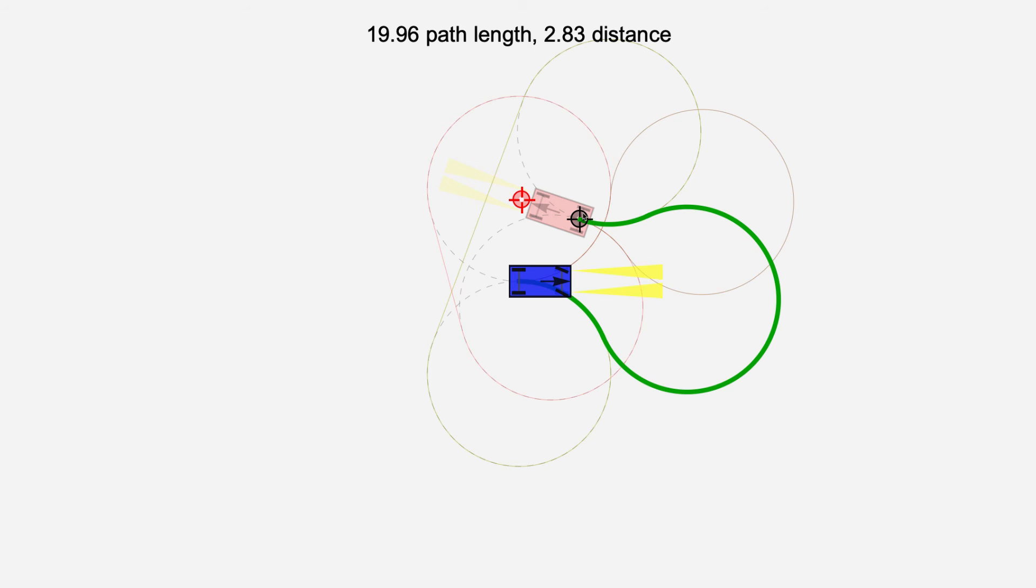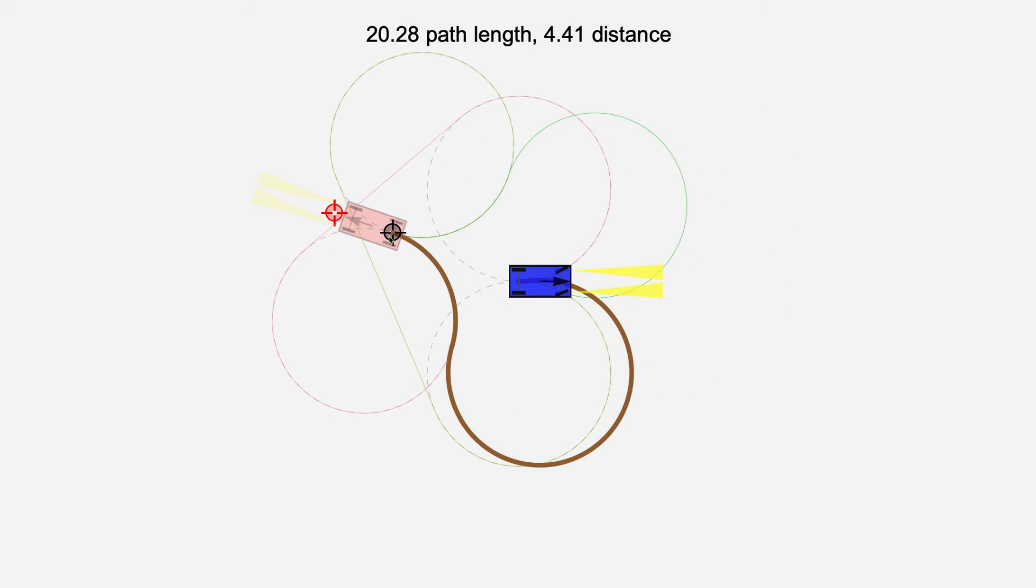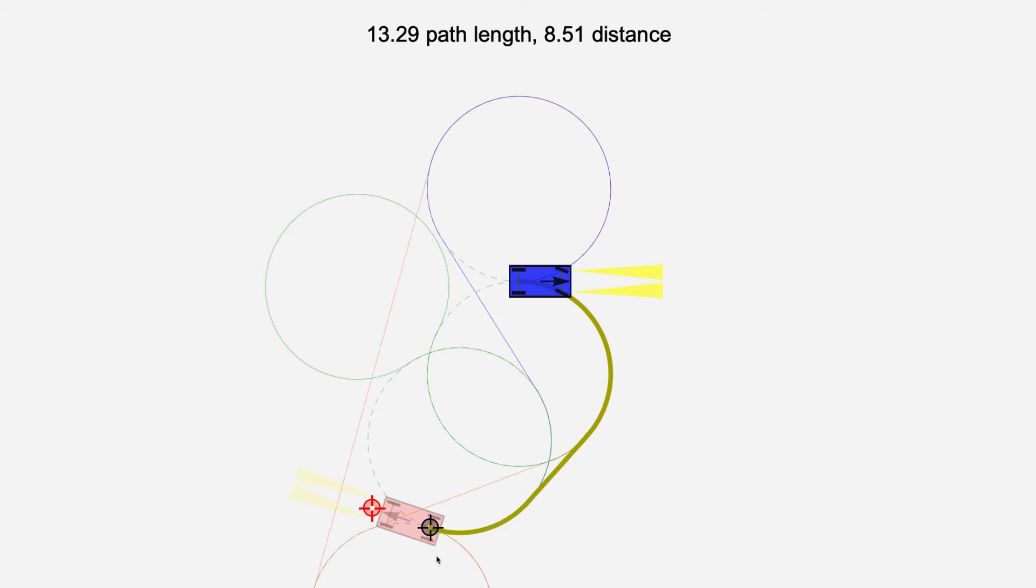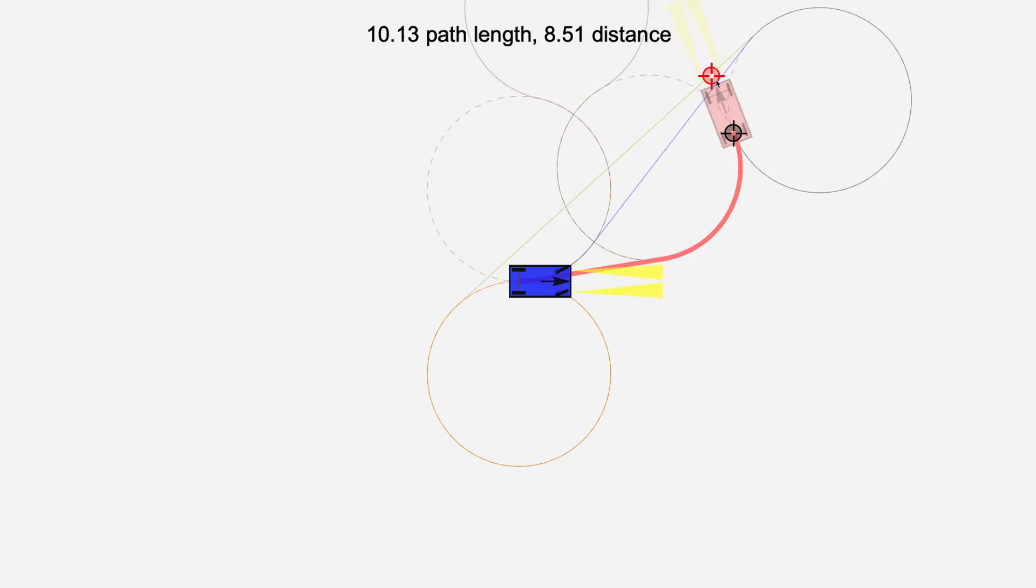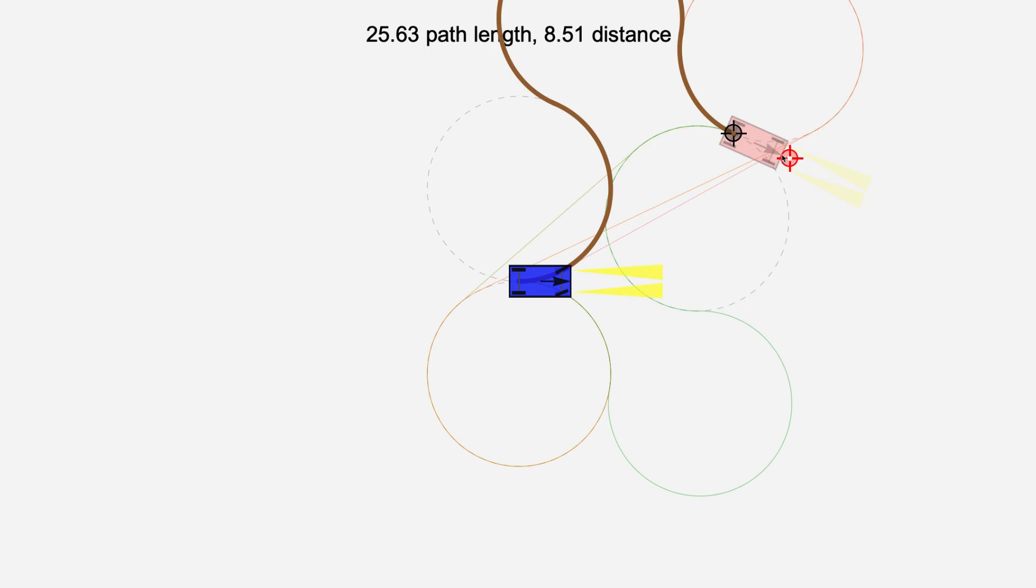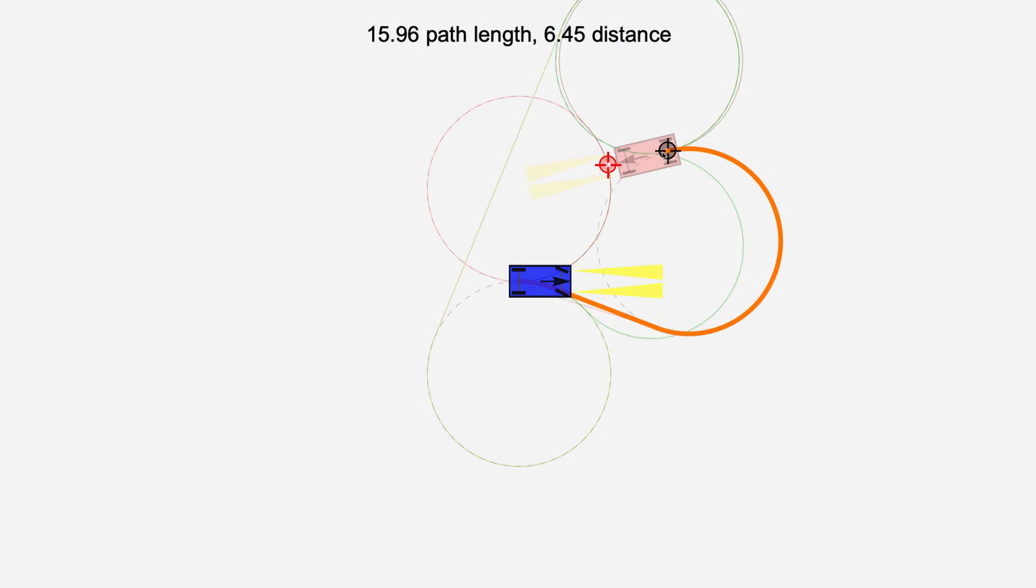This demonstration determines the shortest path by computing the paths using all of the valid words and then picks the one with the shortest length. All paths are drawn in their respective colors, but the shortest path is drawn with a thicker line.